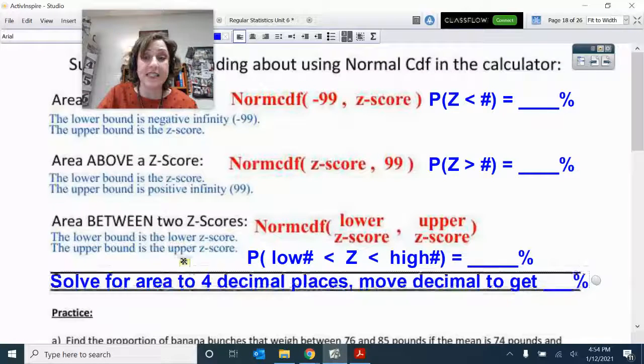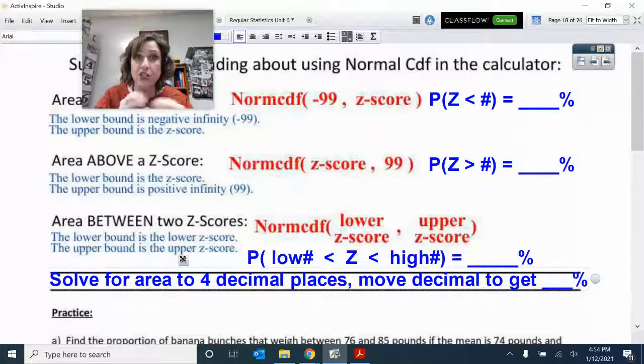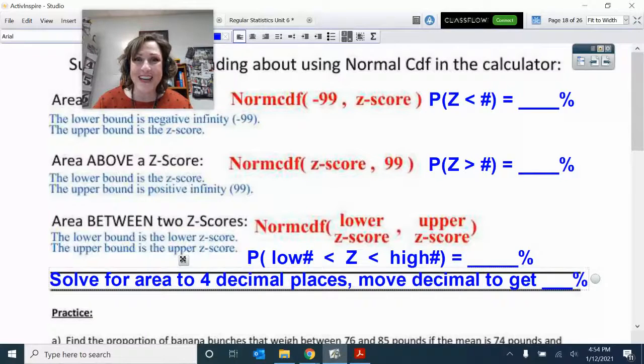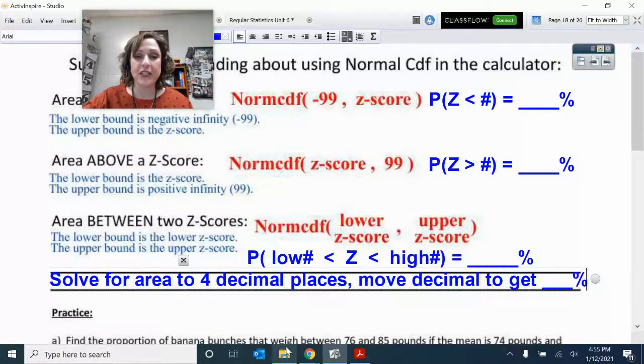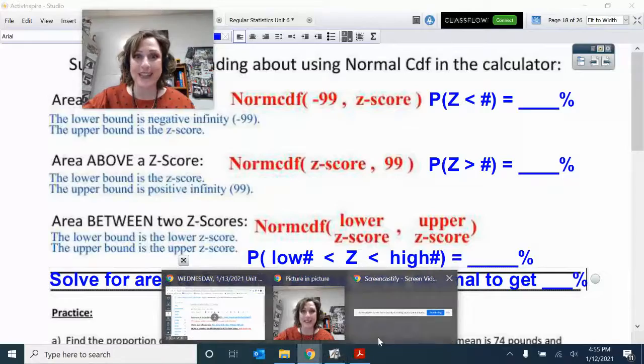So in summary, that's how you need to do your probability notation whenever you're coming up with your areas, whether that be above, below, or in between. Good luck on your assignment that practices this.